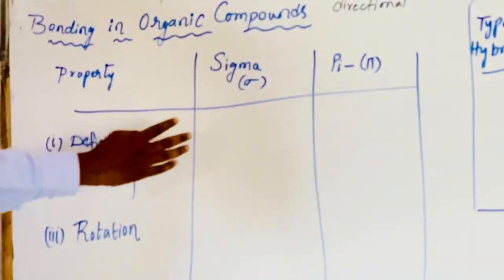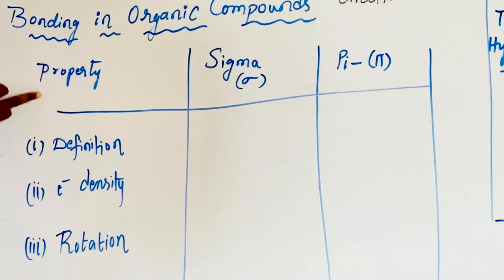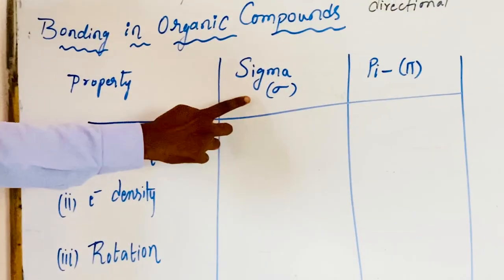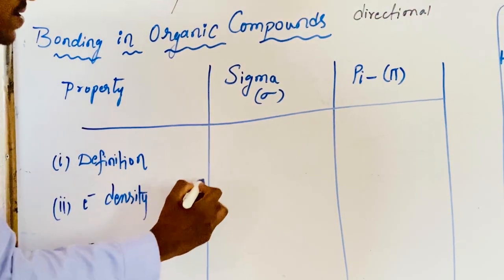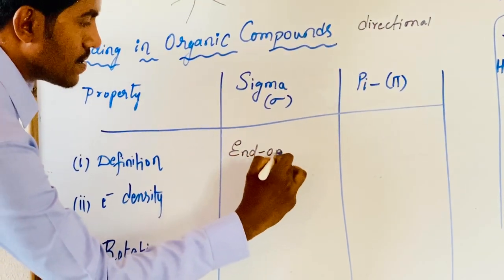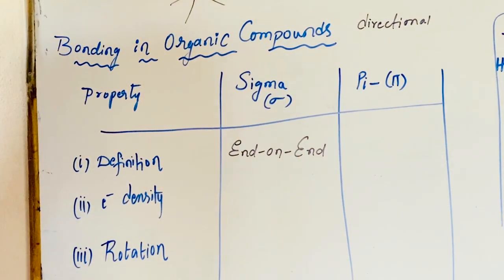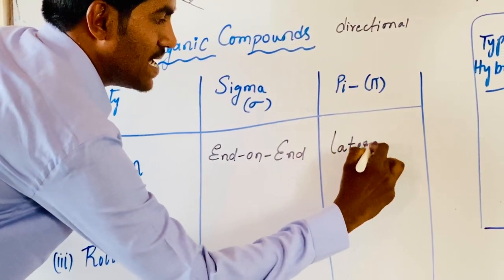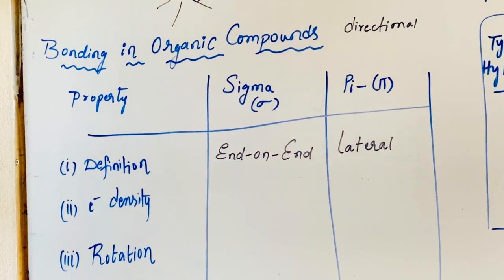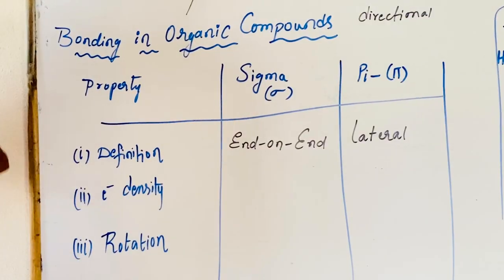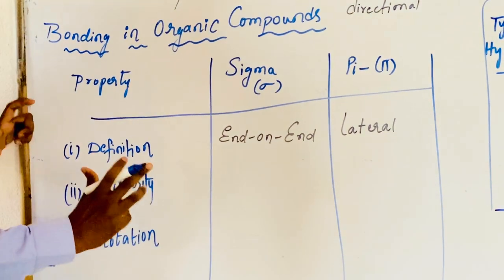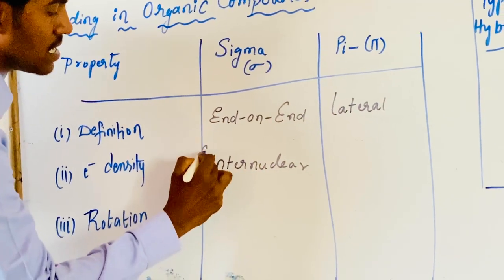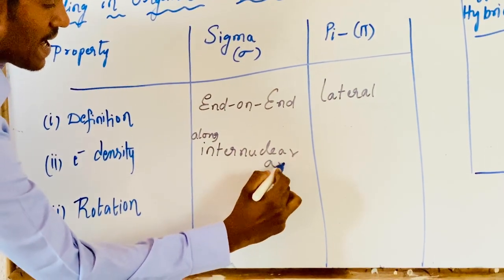The difference between sigma bond and pi bond: First, definition. A sigma bond is formed by end-on-end overlapping. A pi bond is formed by lateral overlapping or sidewise overlapping. For electron density — in sigma, it is concentrated along the inter-nuclear axis.